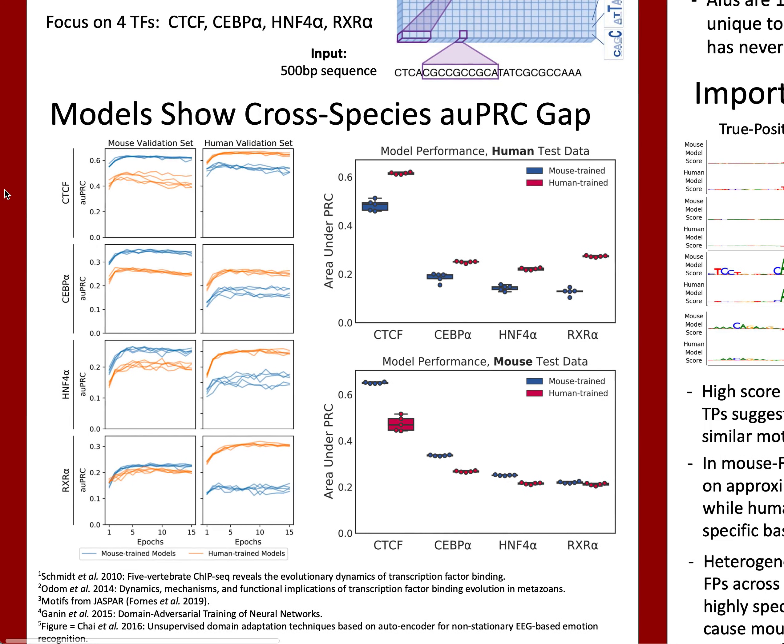What we saw was that for each of the TFs surveyed, there was a noticeable gap in performance between the within-species and the cross-species models, shown between the blue and the orange lines on the left, and between the colors of box plots on the right. This gap was particularly large on the test data sets from the human genome.